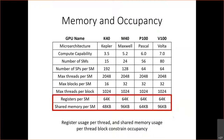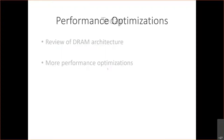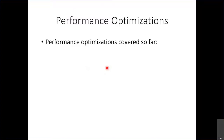If there are no further questions, today we will review the DRAM architecture — how DRAM is organized — and that will motivate an optimization we'll discuss. We'll also talk about another performance optimization that comes up frequently. In terms of performance optimizations, we've seen several so far: tuning resource usage to maximize occupancy, and minimizing control divergence to increase SIMD efficiency.